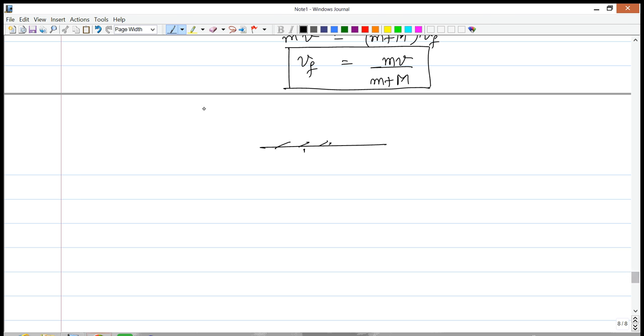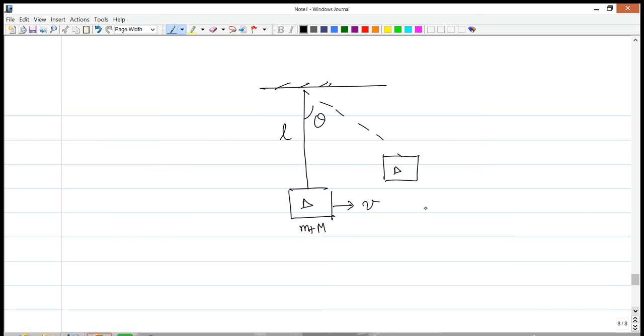Now, the second part of the problem is something like this. You have a pendulum of mass m plus capital M because they're moving as one unit. And that is moving with a speed v_f. And the length of the pendulum is L. And we are asking, what is the maximum angle that this is going to make? So again, ask yourself this question. What concept can we use? Pause it right now and figure it out.